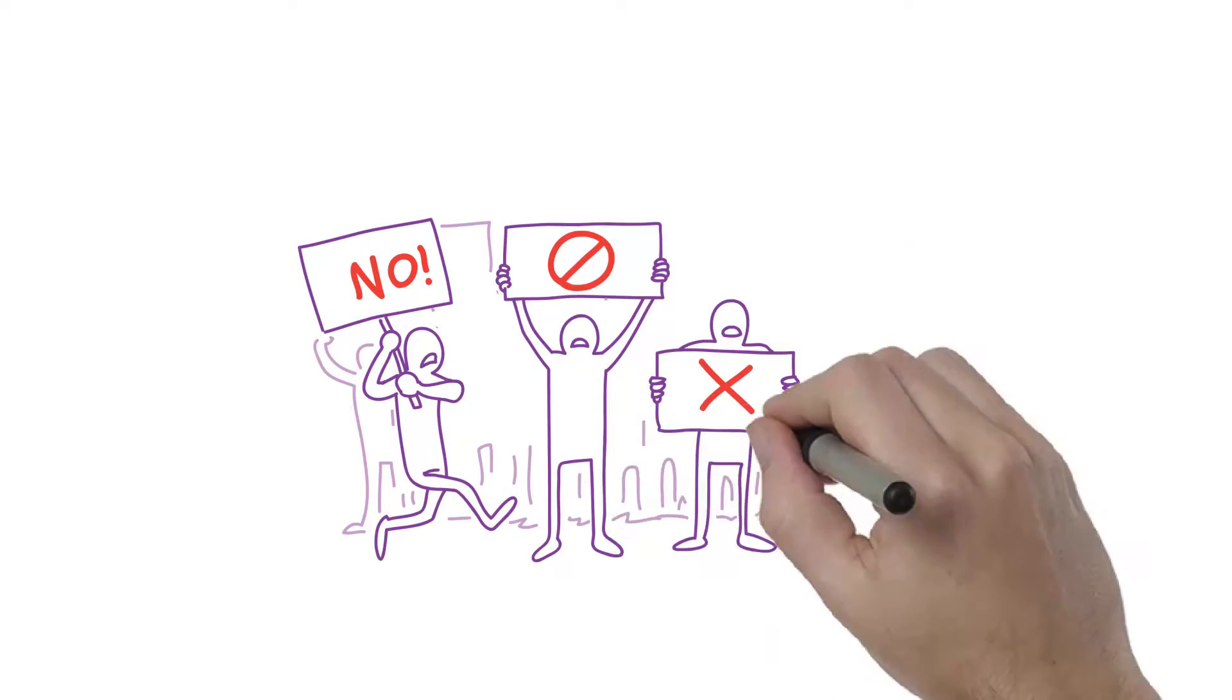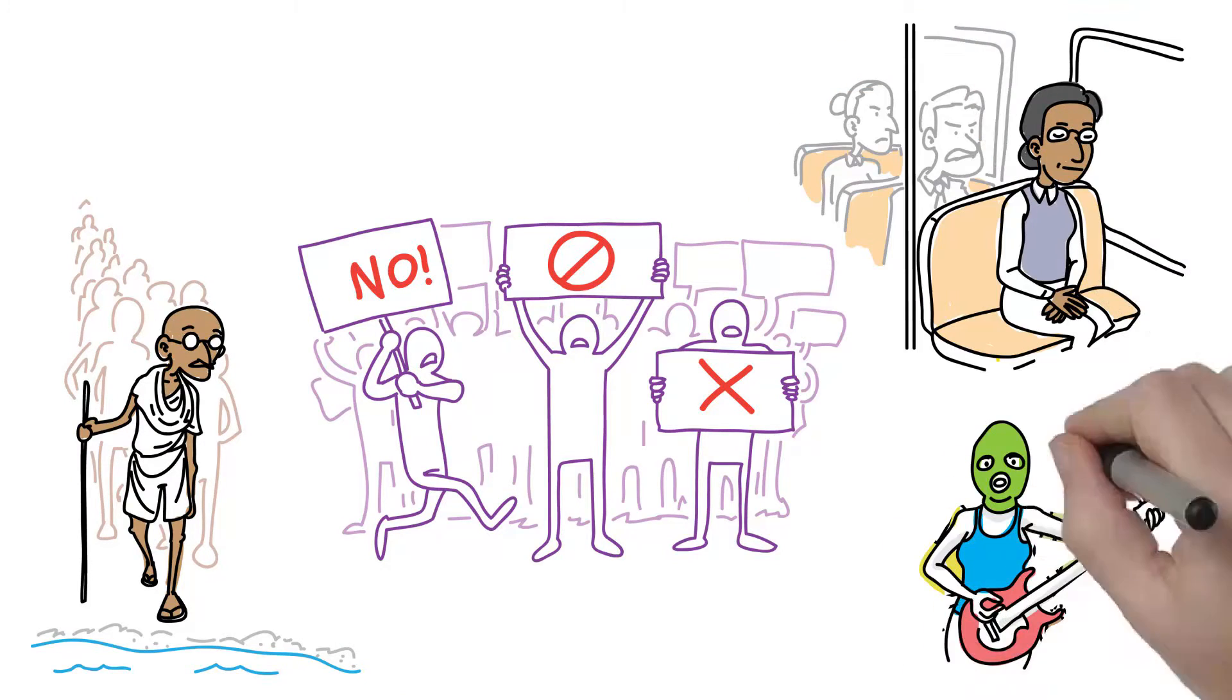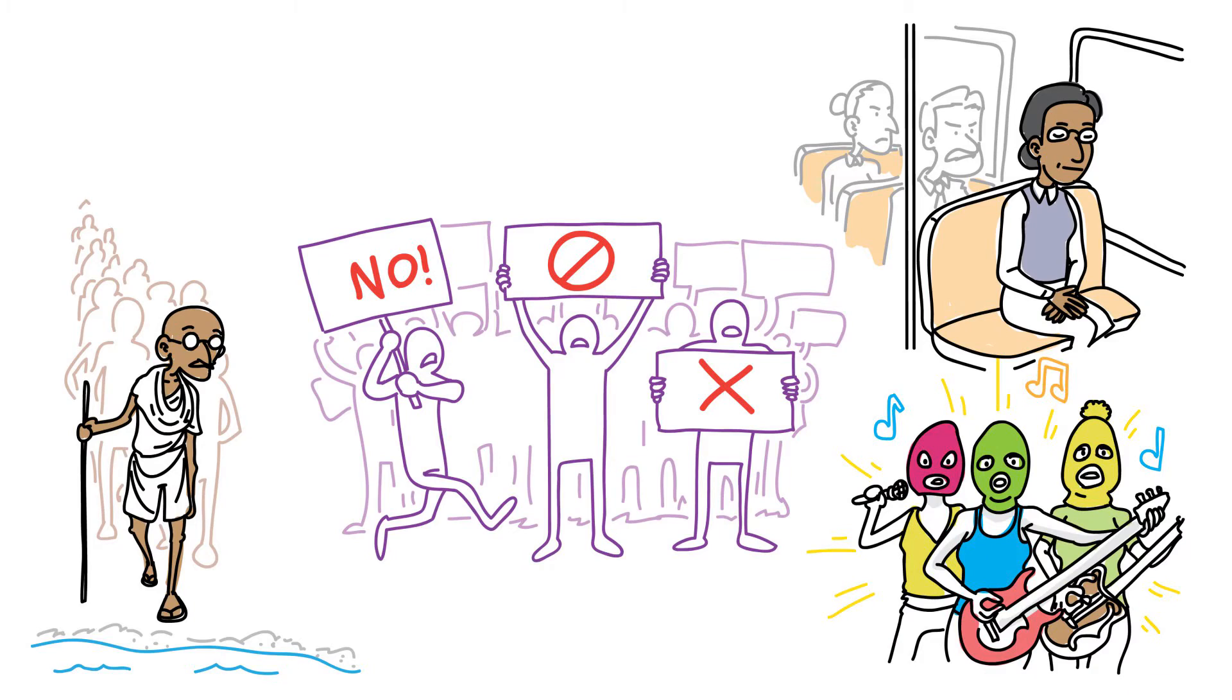They made a plan and recruited some friends. And step-by-step, action-by-action, victory-by-victory, they got their message out there and challenged the status quo.